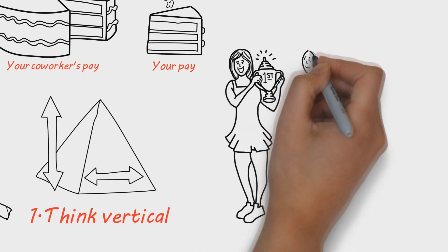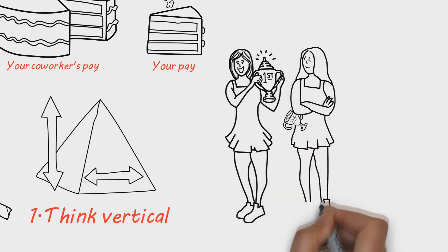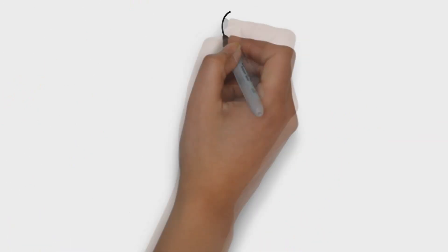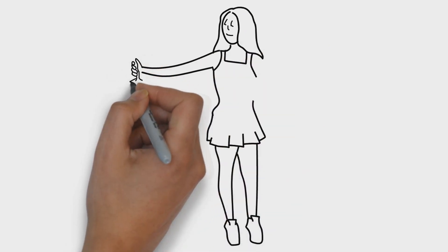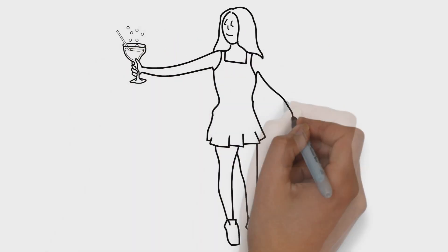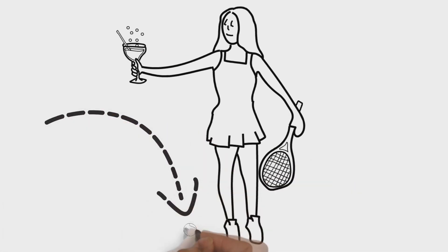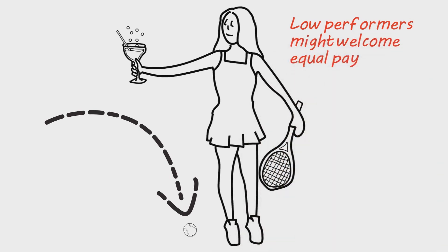Vertical pay gaps have a different effect. People expect to earn more when they climb a rung on the corporate ladder, just like tennis players expect to earn more when they advance at Wimbledon. Think what would happen if all the players got paid the same just for showing up. Low performers might welcome equal pay, but high achievers would lose their incentive to dive for volleys and chase down lobs.